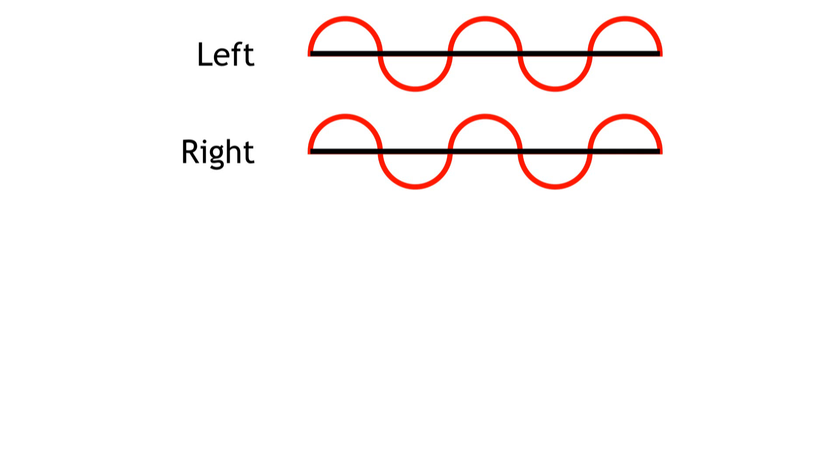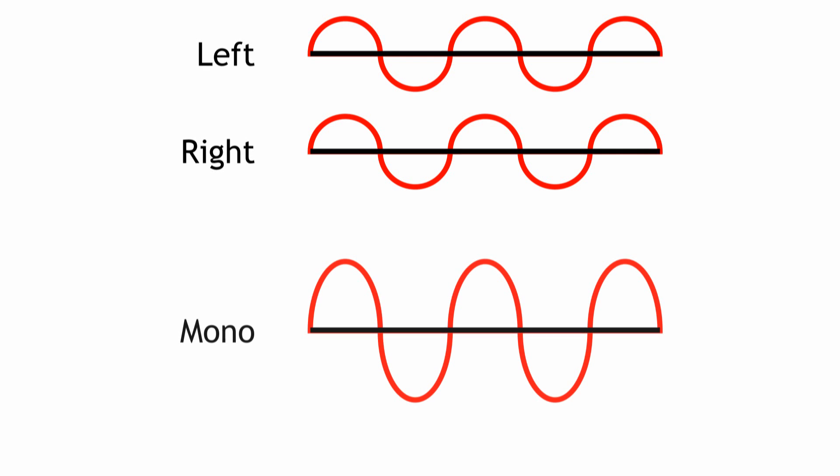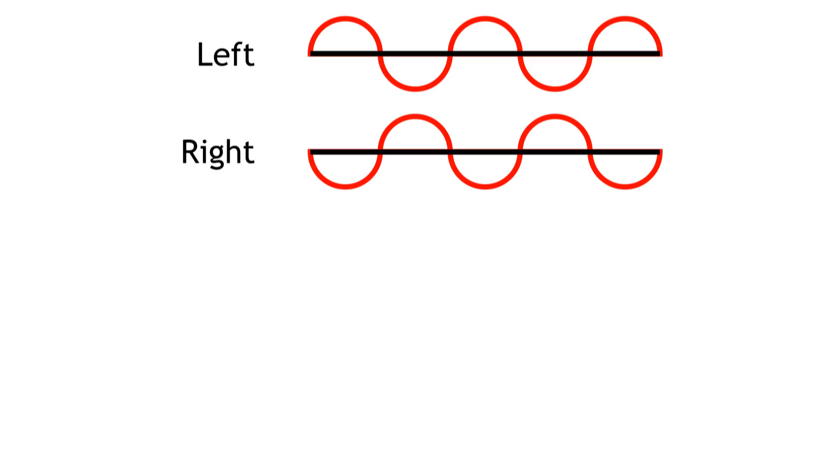Stereo sound is made up of two channels — there is a left channel and a right channel. These two channels are normally played through separate stereo speakers, and that's fine. But to play them through one mono speaker, you have to combine the signals. Usually, that's also fine. But it can happen that the channels are out of phase.